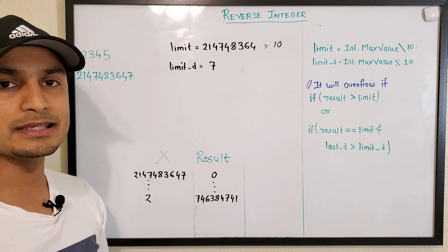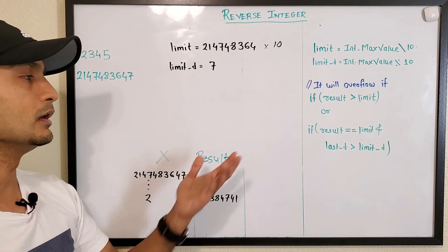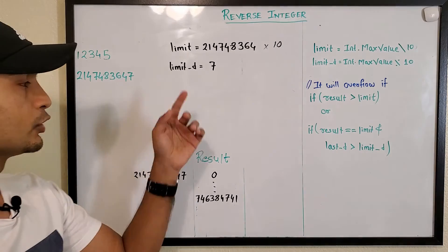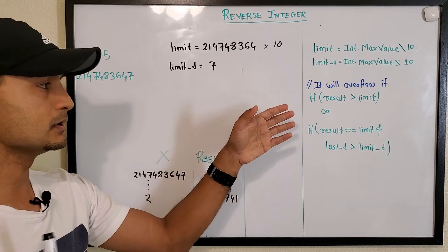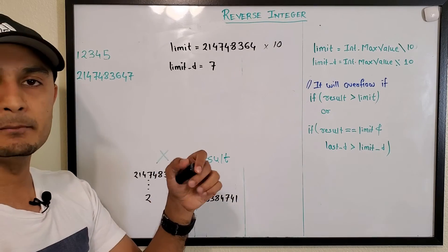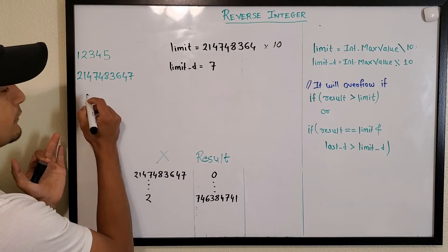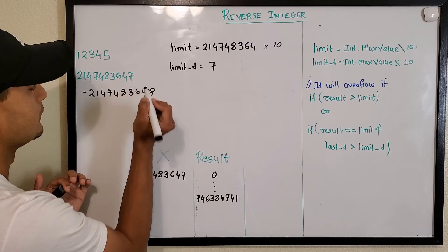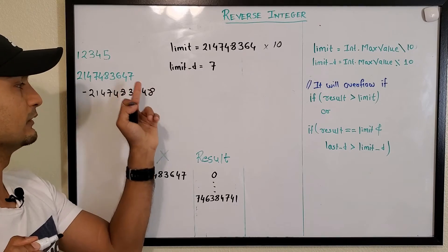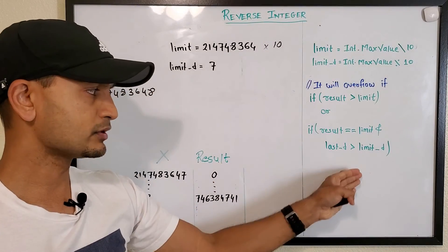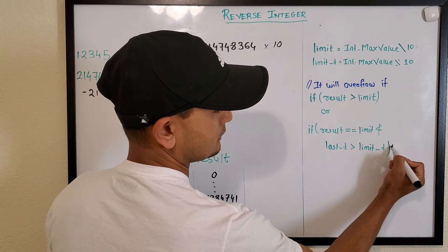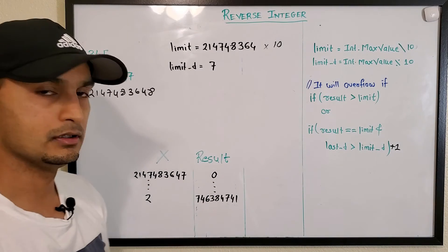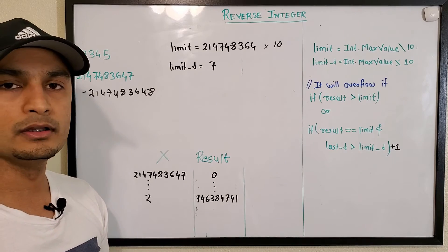Feel free to implement either approach — the first one is easier and quicker to code, the second takes more time. There is a special case for negative numbers in the second approach. The minimum value a 32-bit integer can hold is one greater in magnitude than the max positive value, so instead of checking last digit greater than 7, for negative numbers we check greater than 8.